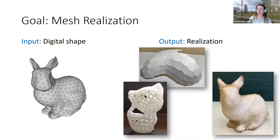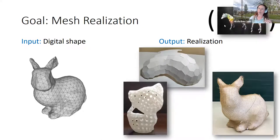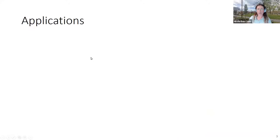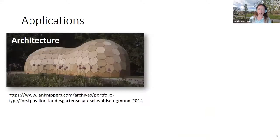We're looking at the realization of the surface only, not the volume. Standard 3D printing today can produce almost any shape in many materials, even in color — that's not what we're looking at. There are many applications for this type of realization. One popular application is in architecture — this structure was built in 2014 and is made out of wood.